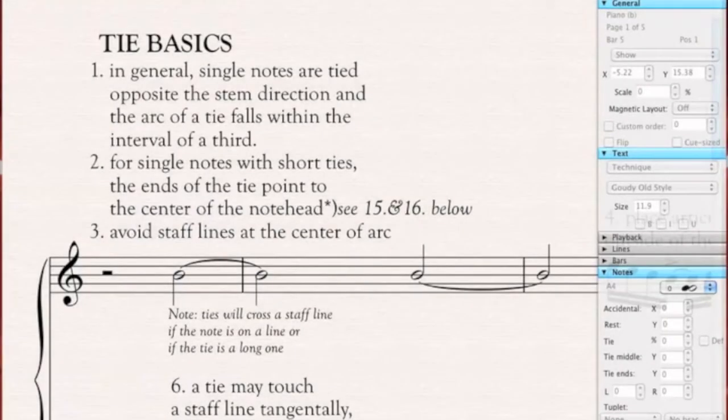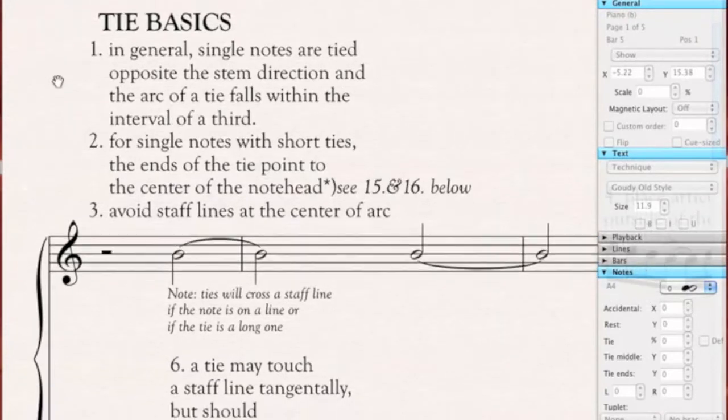I want to talk about some of the nitty gritty aspects of music notation, some of the really gory details. I'm going to start with tie basics.